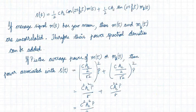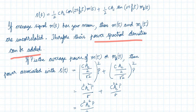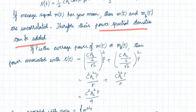The message signal has zero mean. Since the mean of m(t) is zero, m(t) and mh(t) are uncorrelated. The meaning of uncorrelated here is that their power spectral densities can be added independently — the PSD of the m(t) component and the PSD of the mh(t) component can be computed individually and then added.